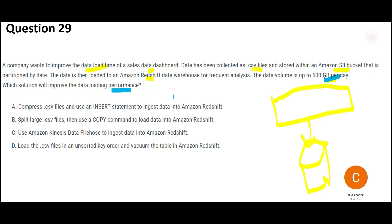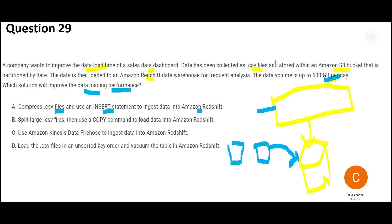Option A says to compress the CSV files and use an INSERT statement to ingest data into Redshift. The performance problem is not at the dashboard level — it is at the data loading level, loading from multiple CSV files into Redshift. Option A compresses multiple small files into one big file and fires a single INSERT statement. This creates a bottleneck: if that one process gets stuck, everything else waits. That is why Option A is wrong.